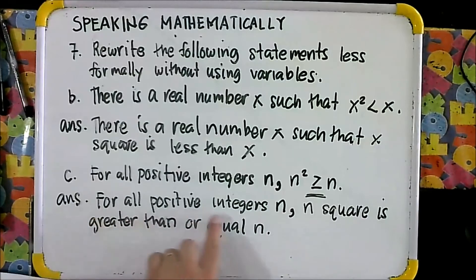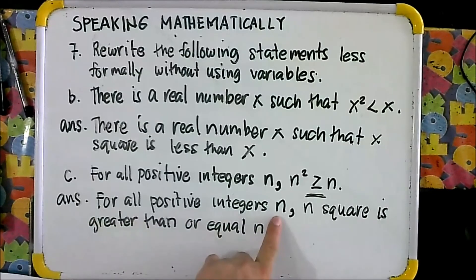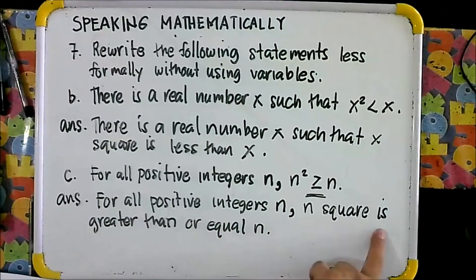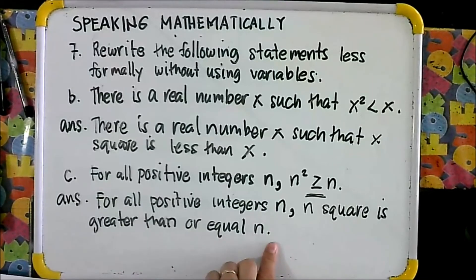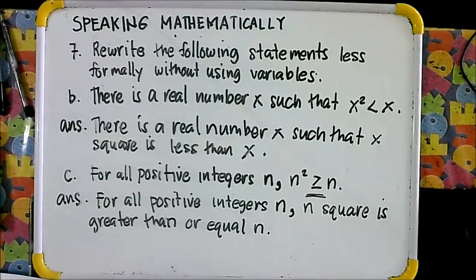Your answer is: for all positive integers N, N squared is greater than or equal to N. That will be your answer.